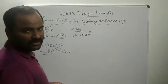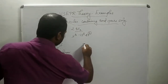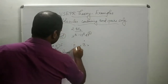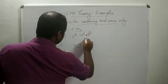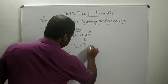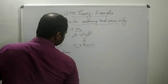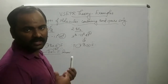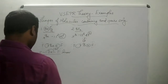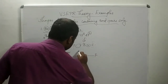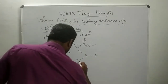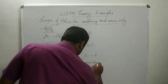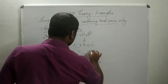Boron has 3 electrons and fluorine has 7 electrons. Boron forms three bonds with three fluorine atoms. The structure of BF3 is trigonal planar, and the bond angle is 120 degrees.